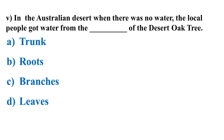In the Australian desert, when there was no water, the local people got water from the dash of the desert oak tree. Options: trunk, roots, branches, leaves. The correct answer is trunk.